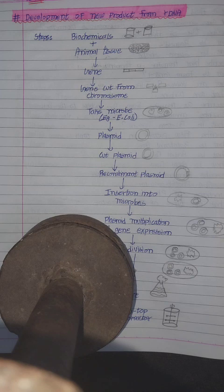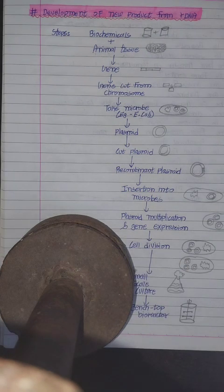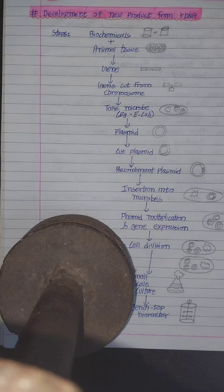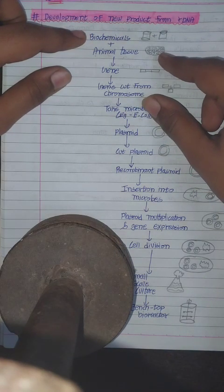We will see every one of these procedures in depth. Stay tuned till the end. In our very first step, we take two materials: the biochemical and animal tissue from which we have to extract our DNA, the recombinant DNA.